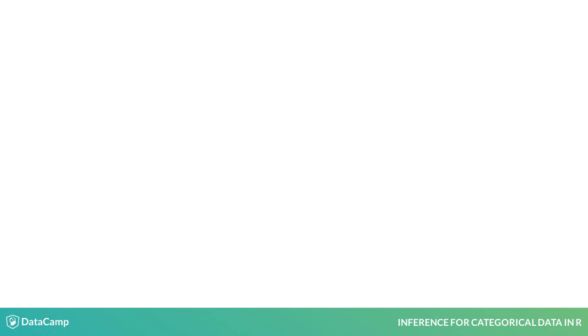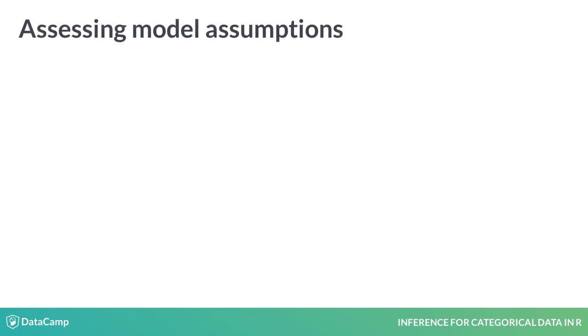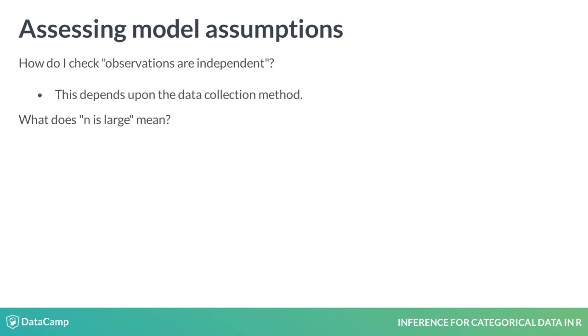When applying this result in practice, it's important to be sure that the assumptions of independence and a large sample aren't wildly off base. To assess independence, you need to consider the method by which the data was collected. A handy rule of thumb to determine if your sample size is large enough is to check that n times p-hat and n times 1 minus p-hat are both greater than or equal to 10.